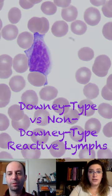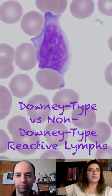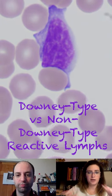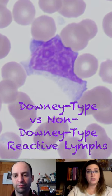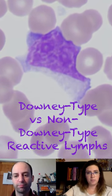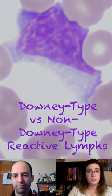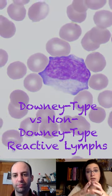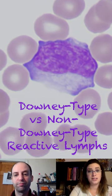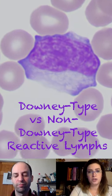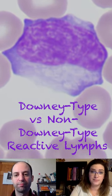Downey-type reactive lymphocytes are usually the spread-out ones that you see, where the cytoplasm is stretching out. The edges have a basophilia to them, and that blue radiates towards a lighter blue as it goes towards the nucleus. The nucleus generally starts to stretch, so you're getting overall a significantly larger cell with the Downey-types versus your non-Downey-types.